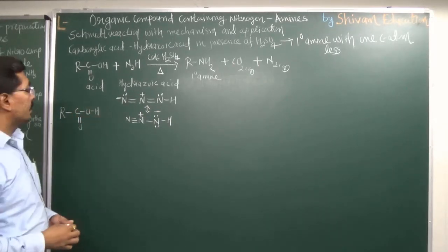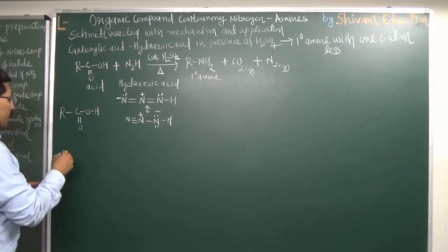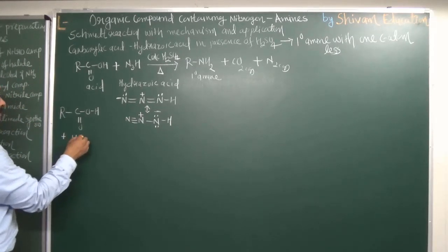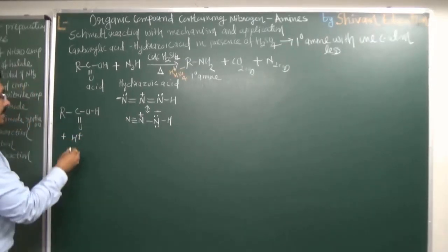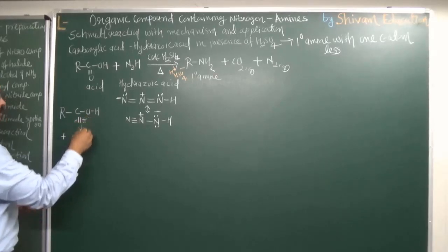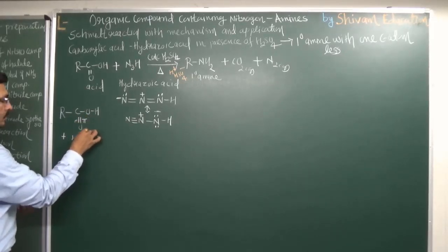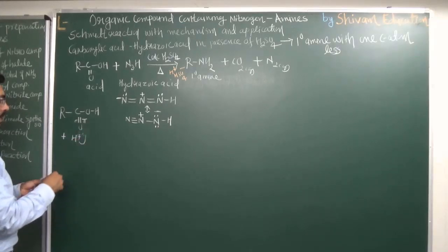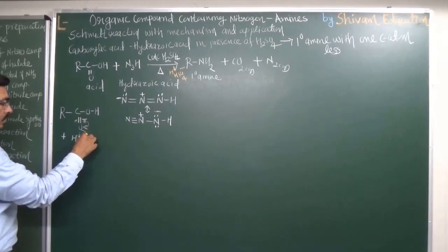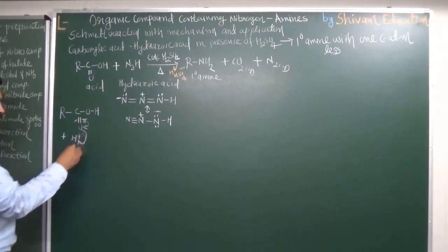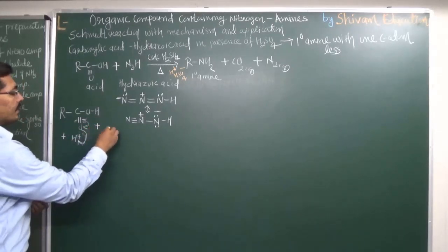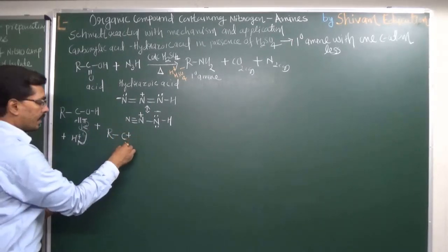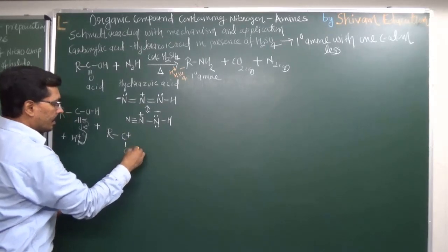Now, with the carboxylic acid, in the presence of acid it undergoes protonation. The sulfuric acid in the reaction medium gives H⁺ ions. This H⁺ ion approaches the oxygen of the carboxyl group. The pi bond electrons transfer to oxygen, and oxygen donates its electron pair to the H⁺ ion.